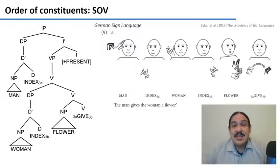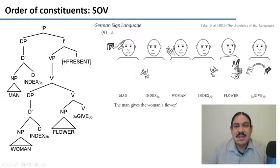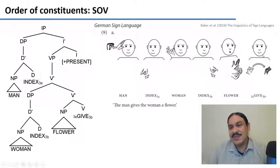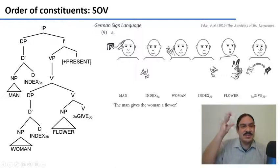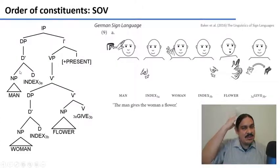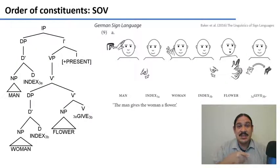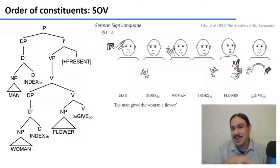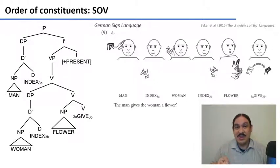The German Sign Language is another example of subject, object, verb. The sentence is 'the man gives the woman a flower.' It's: man index, woman index, flower, index-one gives to index-B. First you have this determiner phrase, man index 3a — you have man, and then you point towards the position that's going to be the placeholder for man, so you don't have to repeat the whole word later. Then woman, and we place woman in position 3b. So now this position refers to man, and this position to woman.